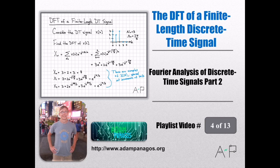We're continuing to work with the DFT. In the previous video, we found samples of the Fourier transform of a continuous time signal. In this example, we're going to start off with a really simple discrete time signal.